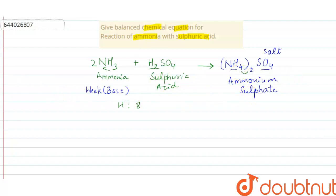This is the balanced chemical equation for the reaction of ammonia with sulfuric acid. So ammonia reacts with sulfuric acid to form a salt, that is ammonium sulfate, and its formula is (NH4)2SO4. Thank you.